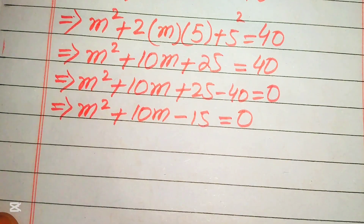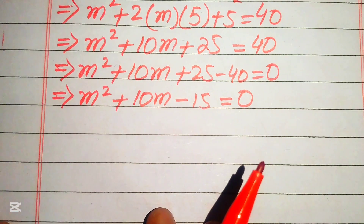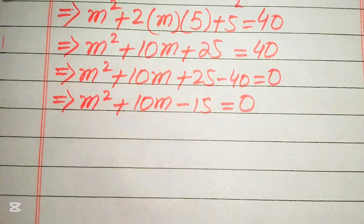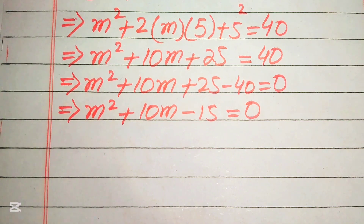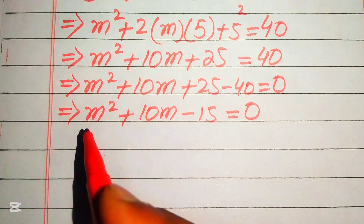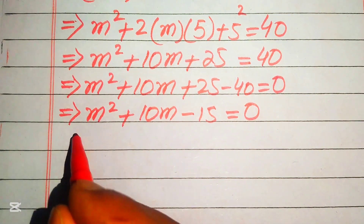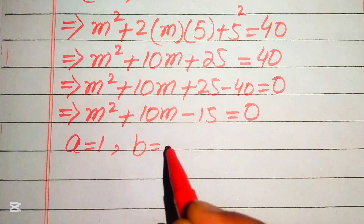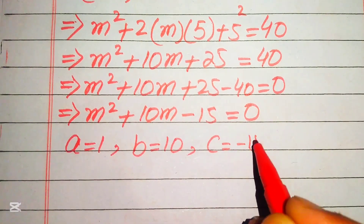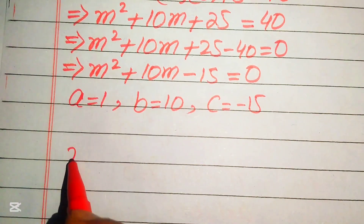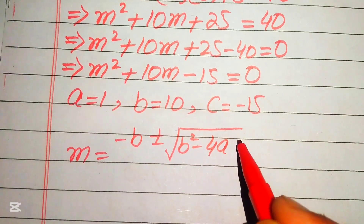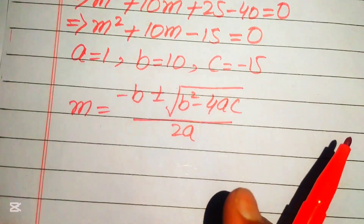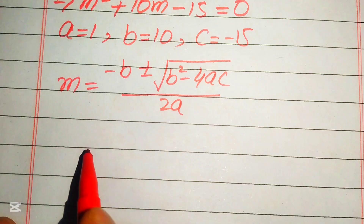This equation is quadratic in m, so we can use the quadratic formula to solve it. We have three methods for quadratic equations: factorization, completing the square, and the quadratic formula. Here we use the quadratic formula. The coefficients are a = 1, b = 10, and c = −15. The quadratic formula is: m = (−b ± √(b² − 4ac)) / (2a).